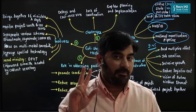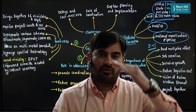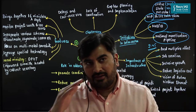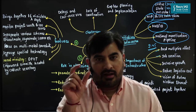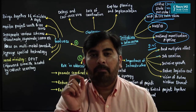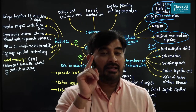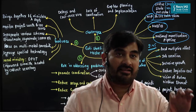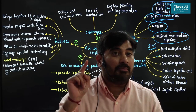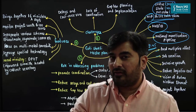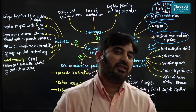Government assets can be categorized as core assets — roads, railways, ports, airports — and non-core assets such as land and buildings. The National Monetization Pipeline covers monetization of only the core assets, not non-core assets like land and buildings. So we are not going to lease out land or buildings under NMP. This is an important distinction for the prelims examination.